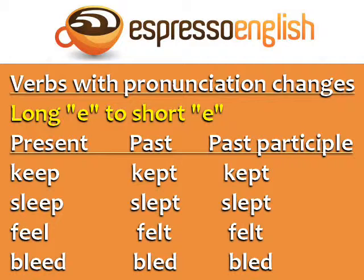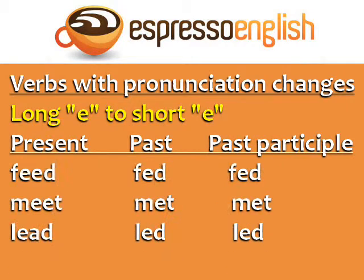Another group of irregular verbs involves pronunciation changes — for example, long E to short E. Keep, kept, kept. Sleep, slept, slept. Feel, felt, felt. Bleed, bled, bled. Feed, fed, fed. Meet, met, met. Lead, led, led.